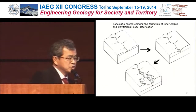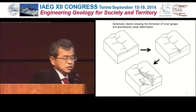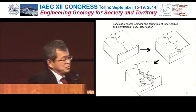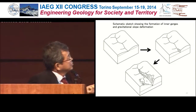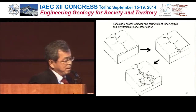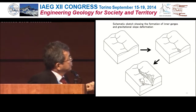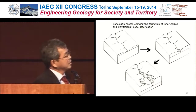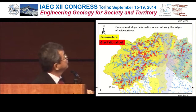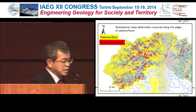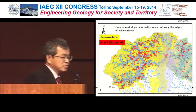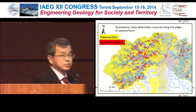This is a schematic sketch showing the formation of inner gorges and gravitational slope deformation. There used to be rather gentler slopes. Stream fluvial incision accelerated with knickpoints propagating upstream. The foot of the slope is undercut, and destabilization and gravitational deformation started. This map shows the paleo surface in red and the gravitational slope deformation also in red. We understand that gravitational slope deformation occurred along the edges of the paleo surfaces.